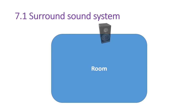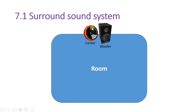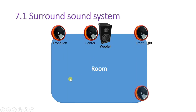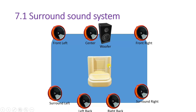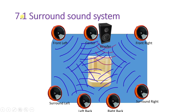Now for the 7.1 surround sound system: there is 1 woofer and 7 speakers. Of those 7 speakers, one is center front, one is front left, and one is front right. Two speakers handle surround right and surround left. The remaining two speakers are placed at back left and back right. The user sitting in the room experiences a realistic surround effect from all 7 speakers and the woofer.